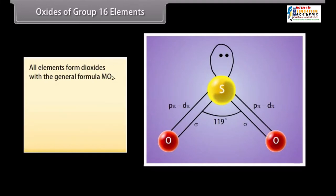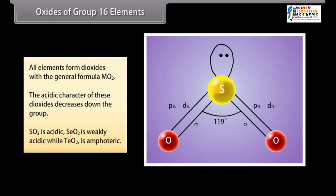All elements form a variety of oxides. All elements form dioxides with a general formula MO2. The acidic character of these dioxides decreases down the group. SO2 is acidic.